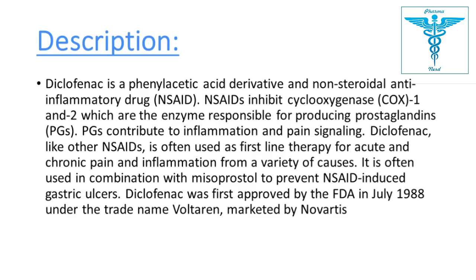NSAIDs inhibit the COX-1 and COX-2 pathways, which are responsible for the production of prostaglandins. Prostaglandins contribute to inflammation and pain signaling. Diclofenac, like other NSAIDs, is often used as first-line therapy for acute and chronic pain and inflammation. It is often combined with misoprostol to prevent gastric ulcers. It was first approved by the FDA in 1988 under the trade name Voltaren, marketed by Novartis.